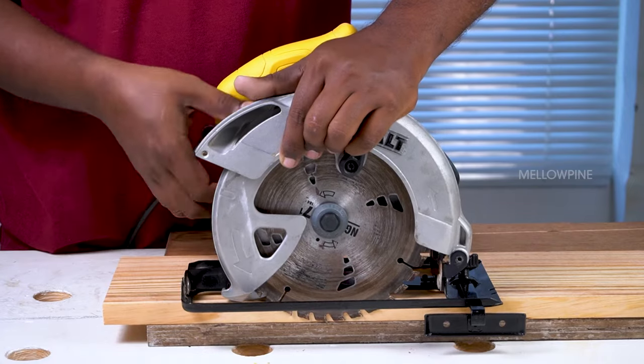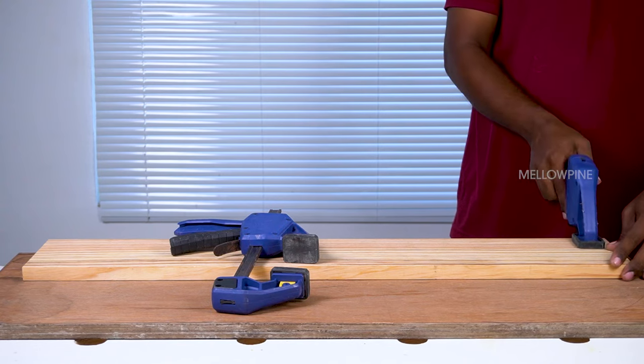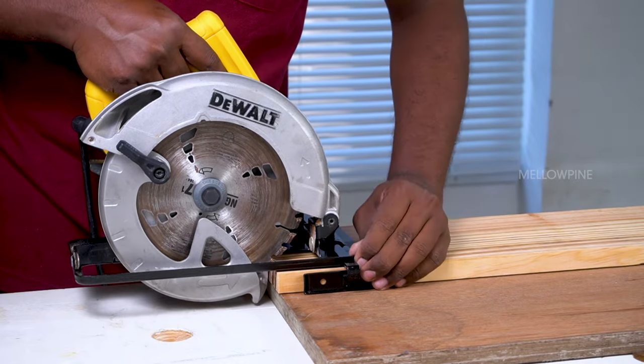Set the blade depth of the saw using the edge of the wood as a reference. Clamp the wood to be ripped at the middle. Align the blade with the cut line and tighten the rip fence.